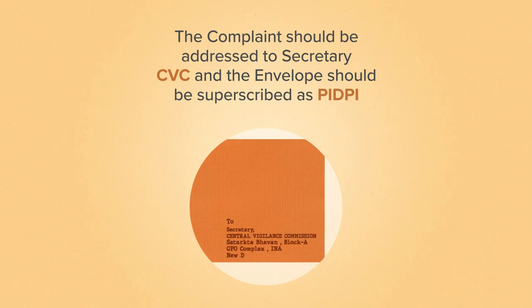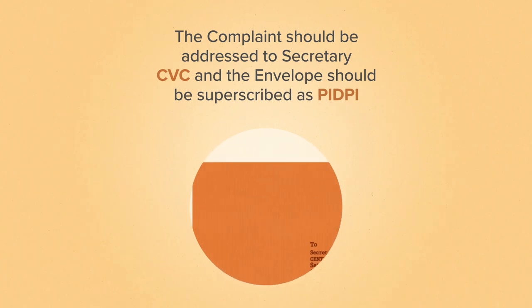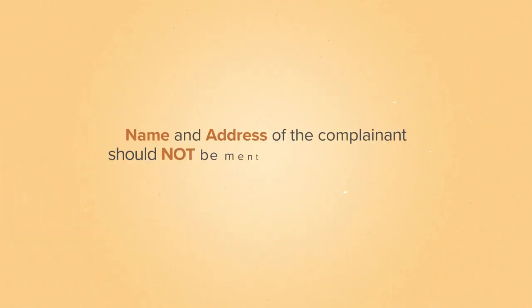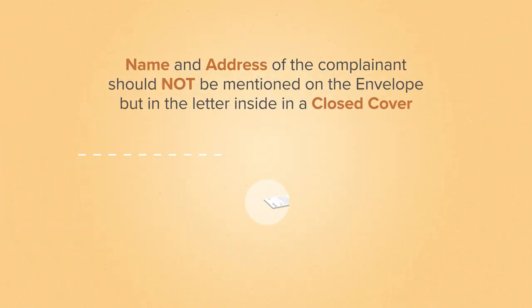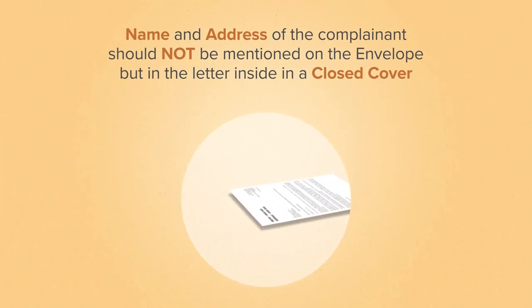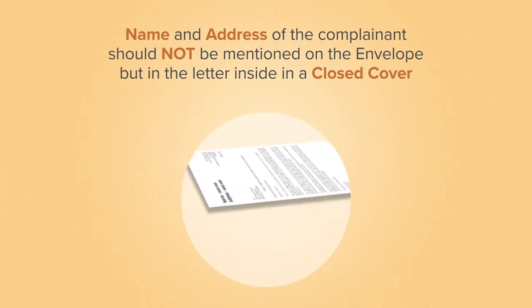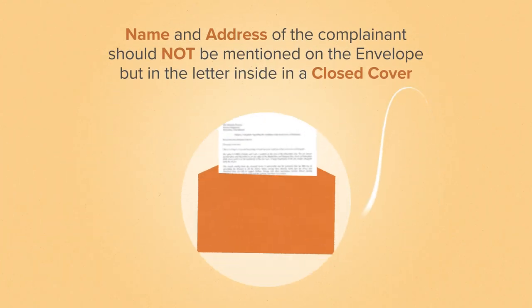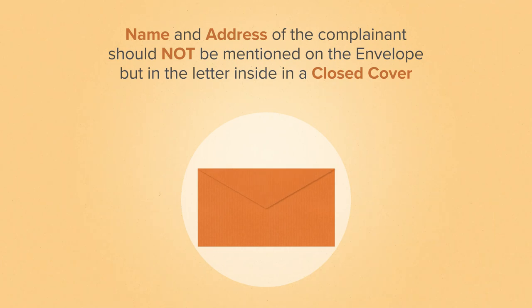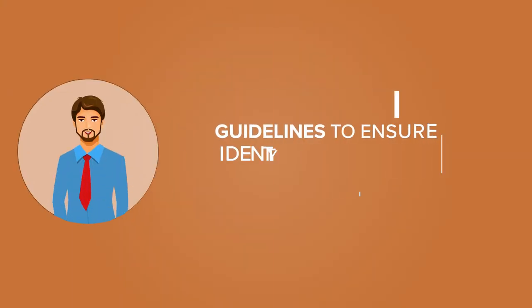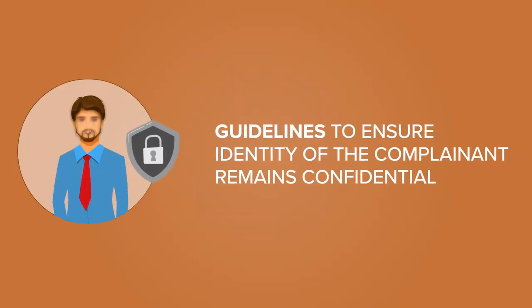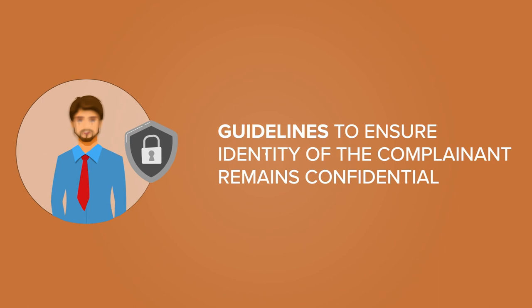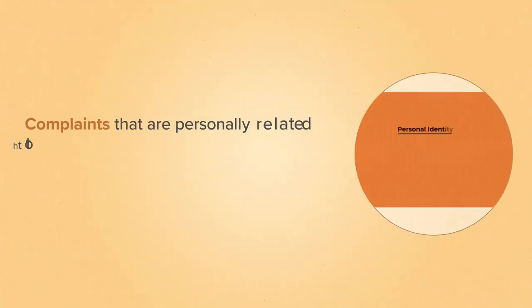The envelope should be superscribed as BIDP. The name and address of the complainant should not be mentioned on the envelope, but should be included in the letter inside a closed cover. These are guidelines to ensure the identity of the complainant remains confidential.